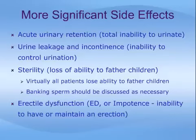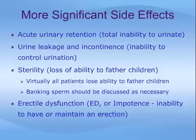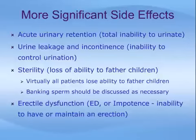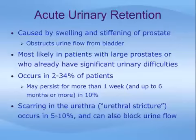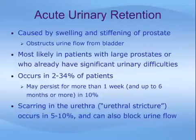More serious side effects include acute urinary retention — the inability to urinate — urine leakage and incontinence, sterility, and erectile dysfunction. Virtually all patients lose the ability to father children after radiation therapy, so banking sperm should be discussed with a doctor prior to treatment if this is important. Acute urinary retention occurs due to swelling and stiffening of the prostate from radiation, and is most likely in patients with large prostates or those with significant urinary difficulties. Urinary retention occurs in 2-34% of patients, and while usually short-lived, in up to 2-10% of men it may persist six months or longer. Scarring in the urethra, called a urethral stricture, occurs in 5-10% of men after brachytherapy and can block urine flow.